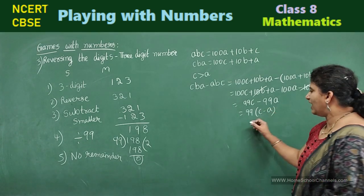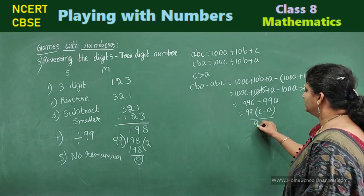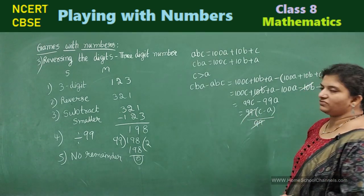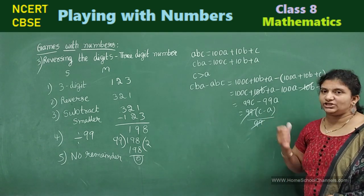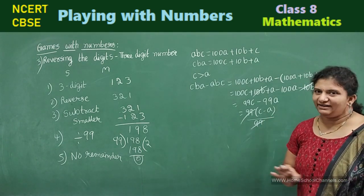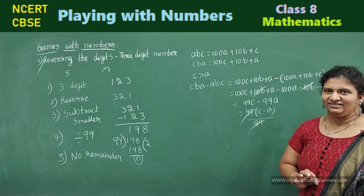Then, your next step. Divide with 99. So, what happens? You are left with C minus A. This is the quotient. There is no remainder. Is this clear?